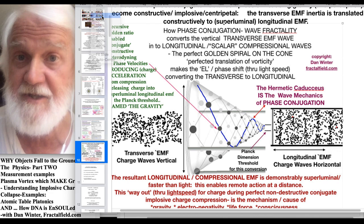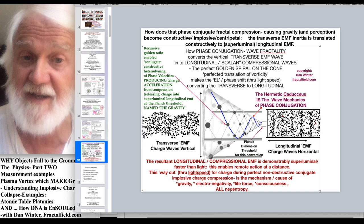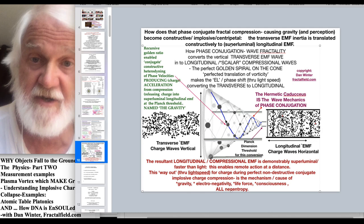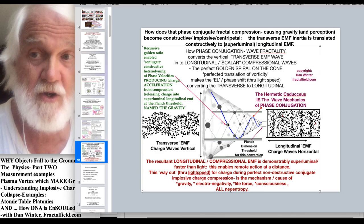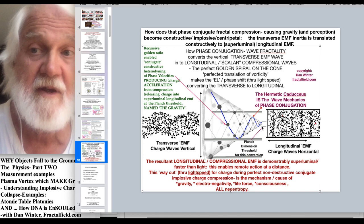Which is that compressional wave is accelerated through the speed of light precisely at the Planck threshold. Let's change the scale on this to see it better. So that down that perfected six degree implosive vortex cone, the transverse electromagnetic wave inertia is converted in the name for golden spiral in hydrodynamics in physics, is called optimized translation of vorticity.